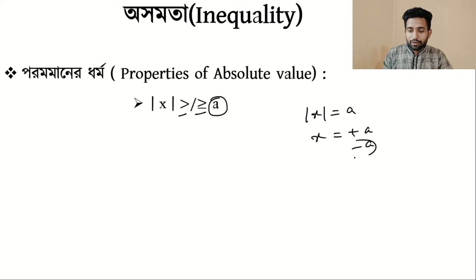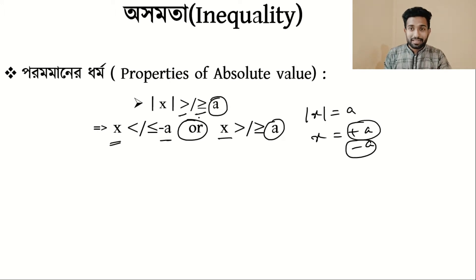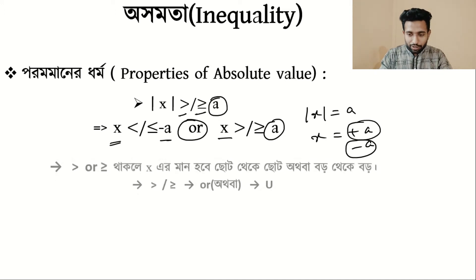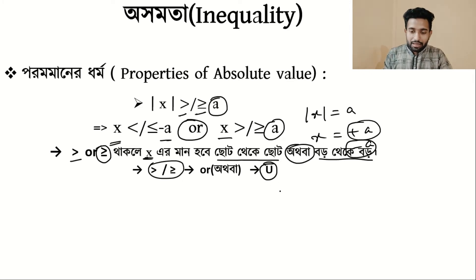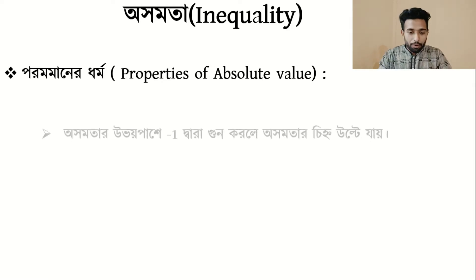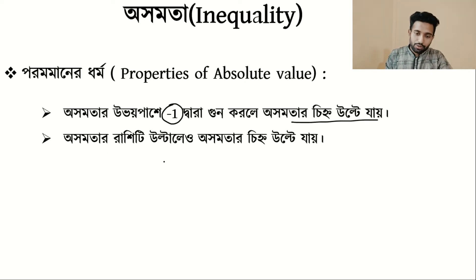If one value is smaller than another, and we have a greater than or greater than or equal condition, then the solution is the intersection of two conditions. But note: if we multiply both sides by a negative number, the inequality sign flips.